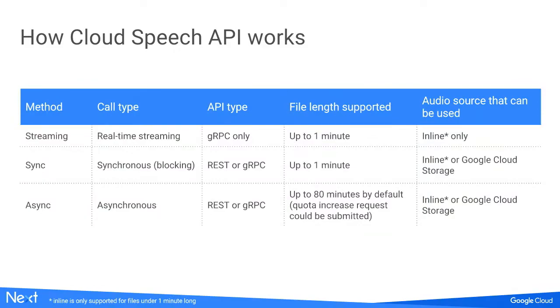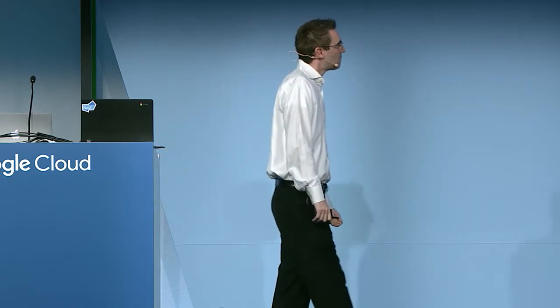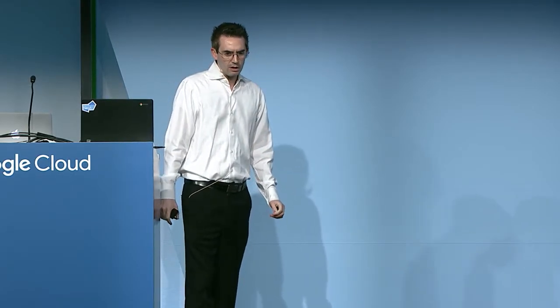We have three different methods for using the Speech API: streaming, sync, and async. Streaming allows you to process speech in real time while the user is speaking — it's the fastest method, and it works with gRPC, which is a faster, more efficient protocol for accessing remote procedures. It can process audio up to a minute included inline in the request. Sync is much easier to use, accessible via REST API or even a curl command, and also processes audio up to a minute.